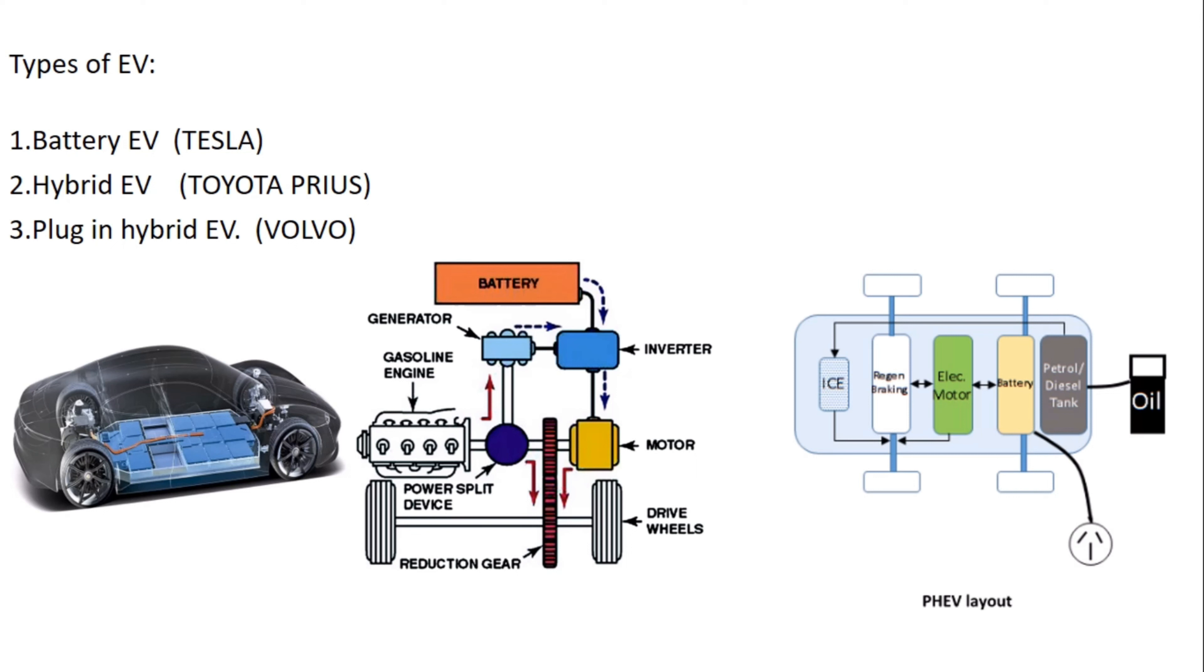The second one is a Hybrid EV like a Toyota Prius. The components it has are battery, inverter, motor or traction motor, IC engine, and generator. In this type of hybrid, we have both mechanisms, IC engine and battery.